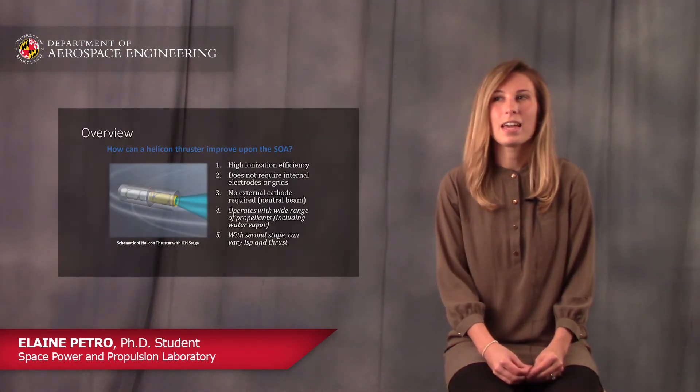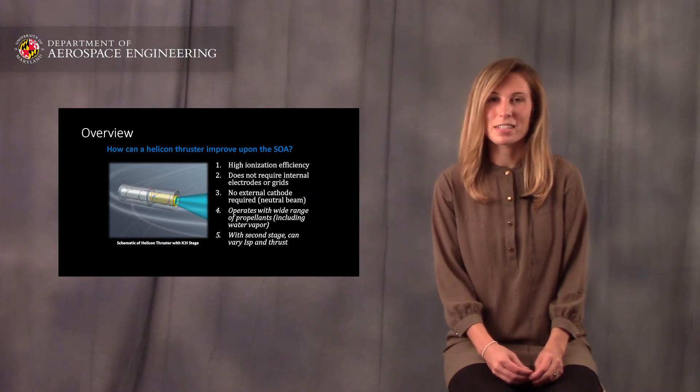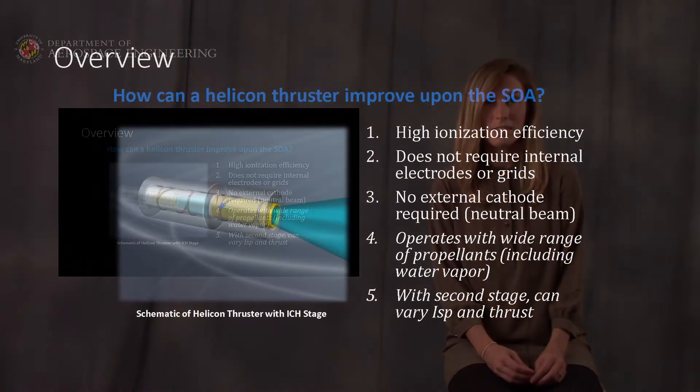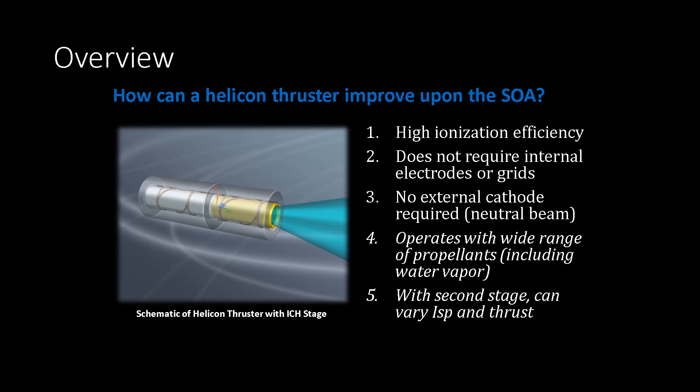A helicon thruster is a type of ion propulsion system, and ion propulsion systems are ideal for deep space travel because we can accelerate the propellant to much higher velocities than we can with the typical chemical propellant system.